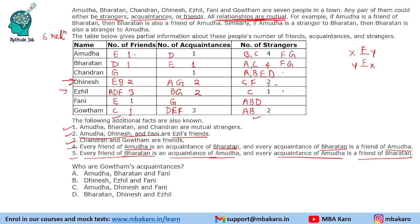So D will be a stranger to C and also a stranger to F. Now for Chandran: A, B, E, D — he has four strangers, so he should have one friend and one acquaintance. The friend is already done. We need the acquaintance. A, B, D, E, G are done — F is remaining. So F will be the acquaintance of C, and by mutual logic, C will be the acquaintance of F. Now F has one friend, three strangers, and two acquaintances — all filled. We can now verify all entries in the table to confirm the information is complete and consistent.